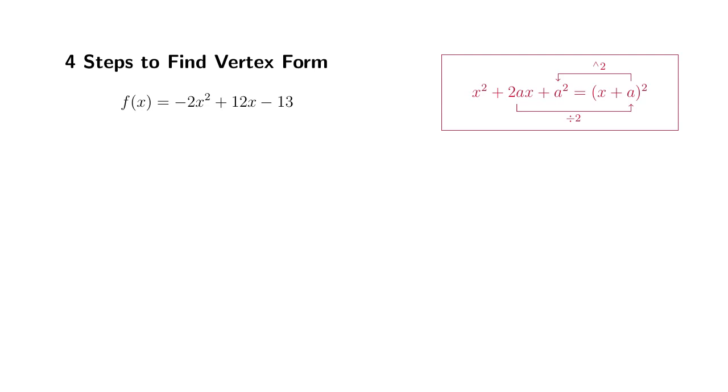Step one, we're going to factor out the leading coefficient from the first two terms. In this case, the leading coefficient is negative 2. If you factor it out, you get the x squared. If you factor negative 2 from positive 12x, you get the negative 6x. Then we're going to leave negative 13 alone, so put it right at the end outside the parentheses.